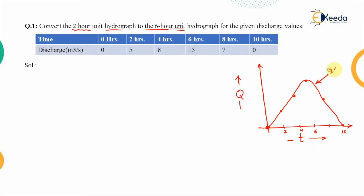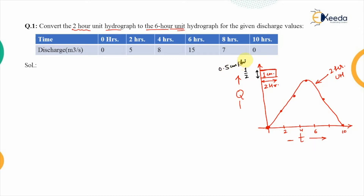Connecting all these points gives the two-hour unit hydrograph. The duration of rainfall was two hours and the rainfall depth was one centimeter, giving an intensity of 1 cm ÷ 2 hours = 0.5 centimeters per hour.